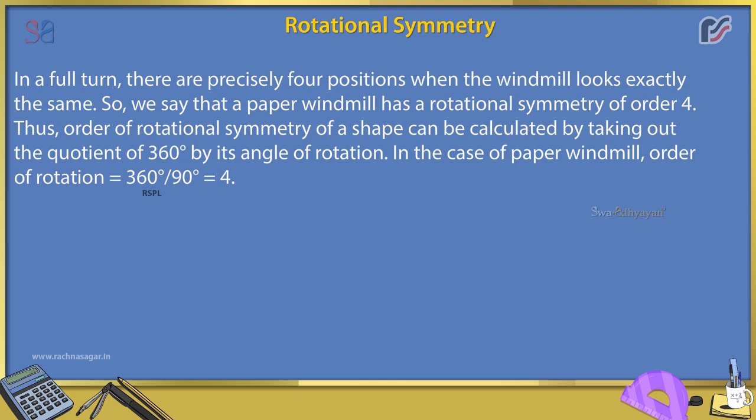In the case of the paper windmill, order of rotation is equal to 360 degrees divided by 90 degrees, which equals 4.